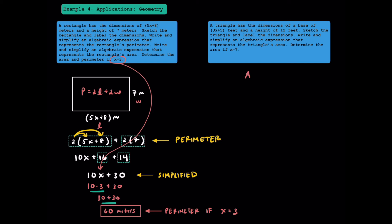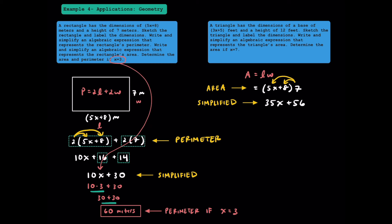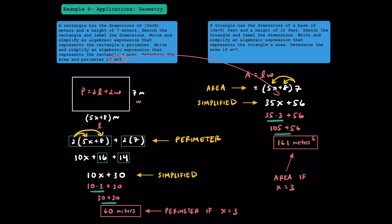To find the area of this rectangle, area equals length times width. Our length is 5x plus 8 and our width is 7. Distributing 7 to 5x gives 35x, and 7 times 8 gives 56. So our expression for area is 35x plus 56. Substituting x equals 3: 35 times 3 plus 56 gives an area of 161 square meters.